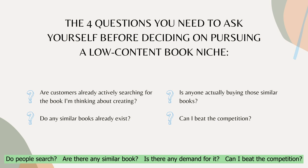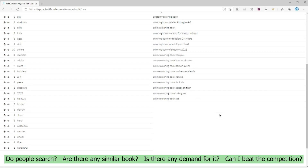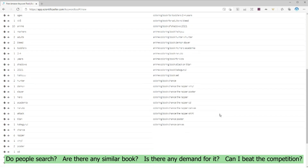You want to go through these four questions for each of your niche ideas until you find one or a few worth pursuing further. You can save the rest of your list for your next round of book creation, but if you have one to three ideas that seem promising, it's time to move forward and find and choose your keywords.